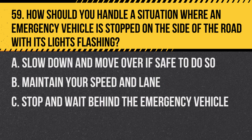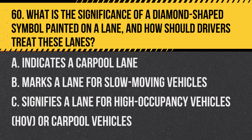Question 59: How should you handle a situation where an emergency vehicle is stopped on the side of the road with its lights flashing? A. Slow down and move over if safe to do so. B. Maintain your speed and lane. C. Stop and wait behind the emergency vehicle. Answer: A. Slow down and move over if safe to do so. When passing a stopped emergency vehicle with flashing lights, slow down and move over to another lane if it's safe.